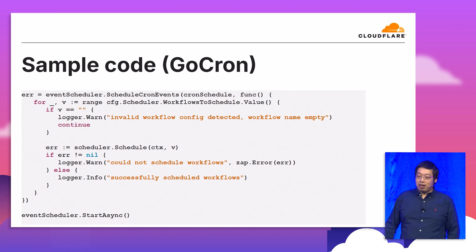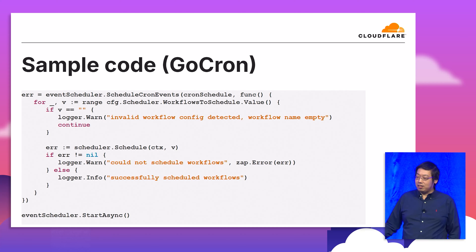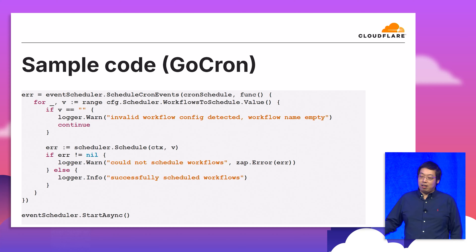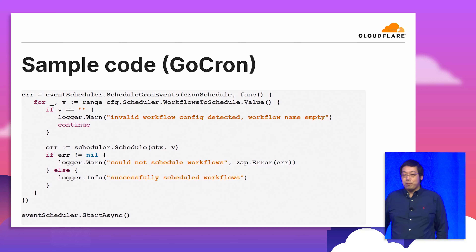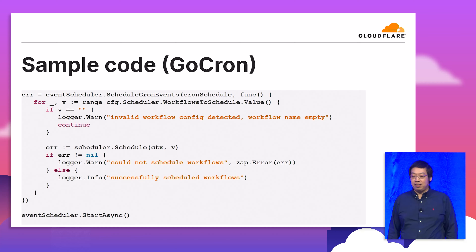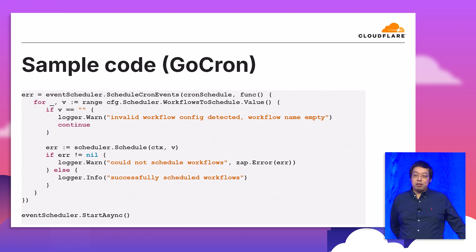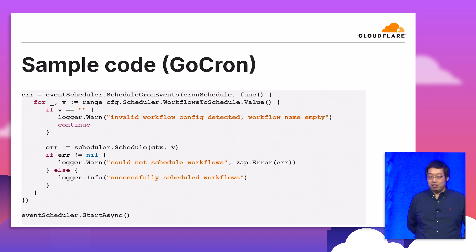Here is an interesting part — how our Temporal scheduler itself is scheduled. This is part of the code for the service scheduler. All our code is written in Go, and we use a Go cron. You define a schedule and run the defined functions. On the defined interval, it does a scan of all repository states, and then the Temporal schedule spins up workflows accordingly.